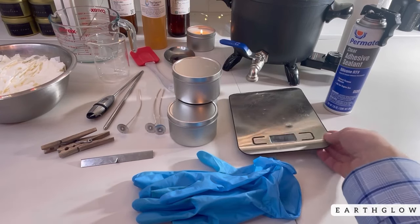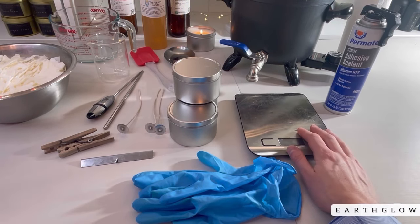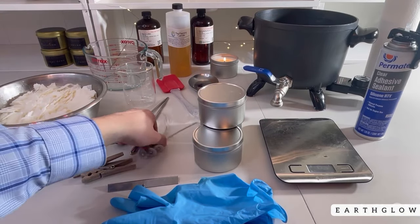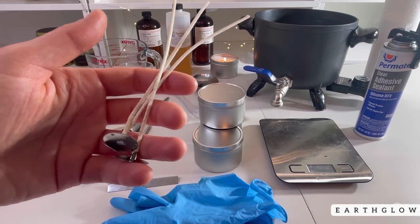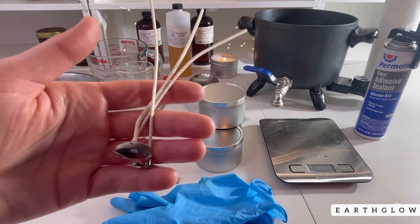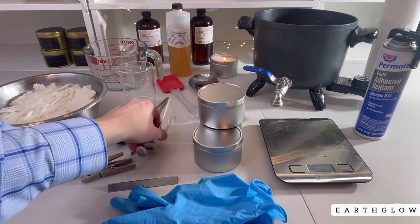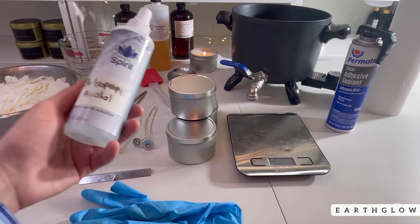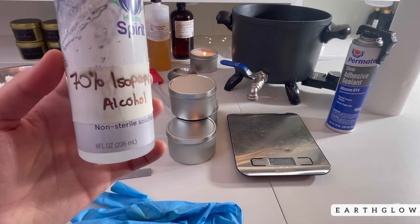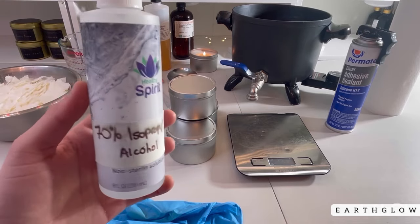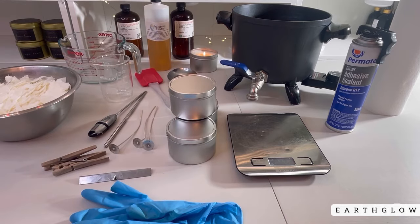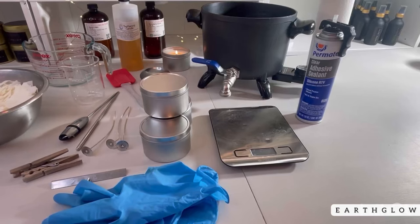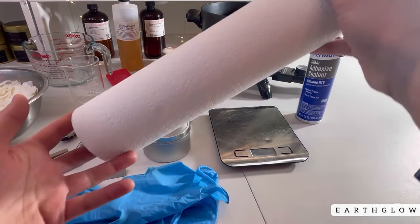The next thing that you'll need for this project is your scale to weigh out your fragrance and wax as well as a set of gloves and you're also going to need wicks. Now for these eight ounce vessels with pure 464 soy I recommend using the CD wick series and for this diameter container the CD 14 works perfectly and you're also going to need some isopropyl alcohol. I actually repurposed a bottle of hand sanitizer for this and finally your star ingredient the presto pot and last but not least it's always a good idea to have some paper towel on hand.